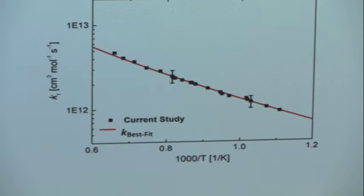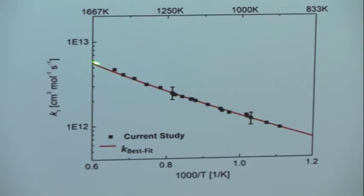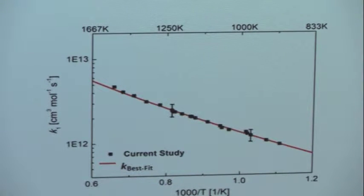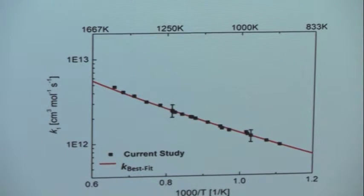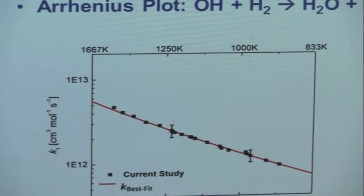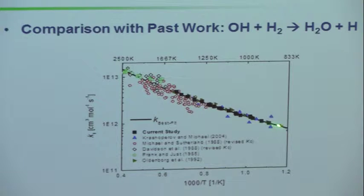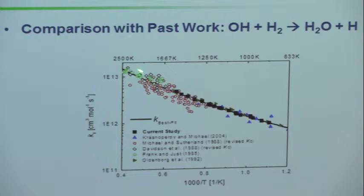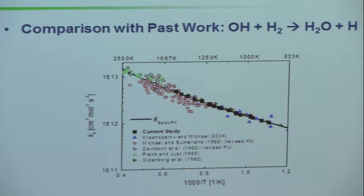We think we can do this to about 3-5% accuracy. Here's the data points and the best-fit for the rate coefficient. Combining all uncertainties, it's probably good to about 17%. When we put our data — shown as black symbols — on this Arrhenius plot, we reduced the uncertainty of this rate coefficient up to about 1500 K. The laser being precise in wavelength and steady in intensity just yields more accurate measurements than other methods.